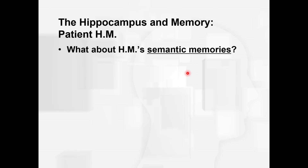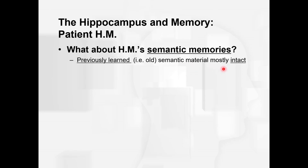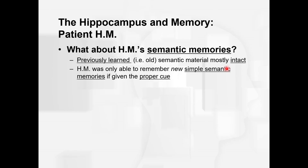But what about HM's semantic memories? Remember, semantic memories are those rules, facts, and concepts. Previously learned semantic memory was mostly intact — those retrograde memories from the past. However, he was only able to remember new simple semantic memories if given a proper cue. His anterograde semantic memory was not completely intact; it was very difficult for him to form new semantic memories, although with some very simple ones and proper cues he could recall them.